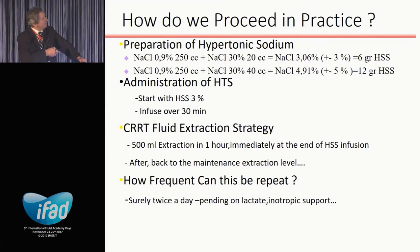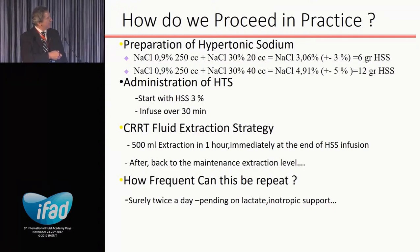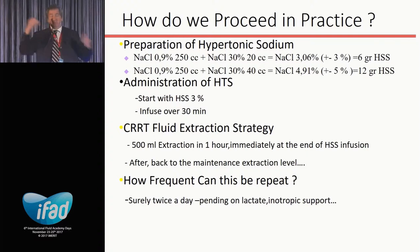If you want to increase to 5 percent, you increase the sodium by about 30 percent and get 5% hypertonic saline, containing about 12 grams of sodium. We start usually with 3 percent, infuse it quickly over about 30 minutes, and then have a CRT fluid extraction strategy of approximately minus 500 ml to 1 liter per hour, then back to classical maintenance extraction levels of between 50 and 300 ml per hour.